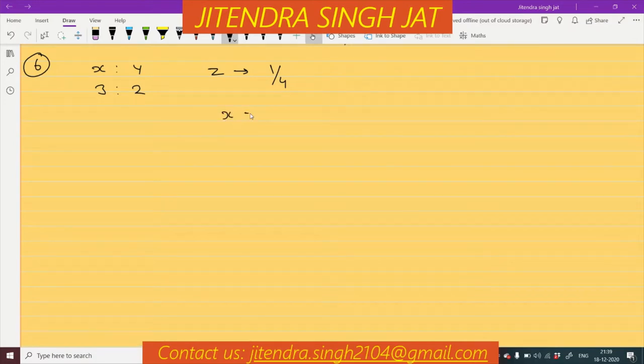Z takes from X, how much? His share is 1 by 4 and he is taking in the ratio of 2 to 1. It means 2 by 3 he is taking from X and 1 by 3 he is taking from Y. From Y, his share is 1 by 4. He is taking 1 by 3 of his share.